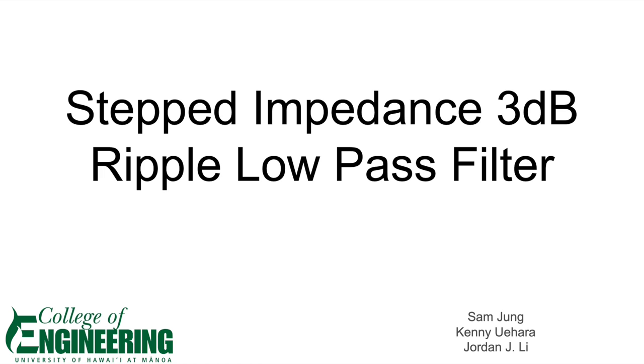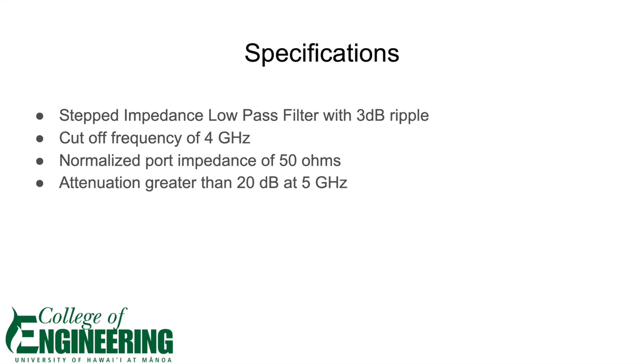Step Impedance 3dB Ripple Low-Pass Filter by Sam, Kenny, and Jordan. Our specifications for this project was to design and build a step impedance 3dB low-pass filter with a cutoff frequency of 4 gigahertz normalized to 50 ohm ports with an attenuation greater than 20dB at 5 gigahertz.